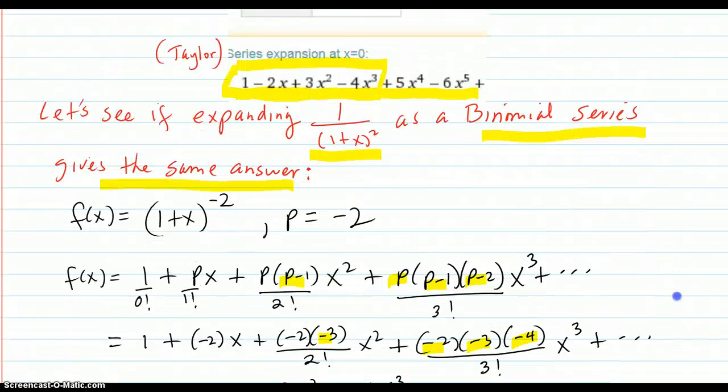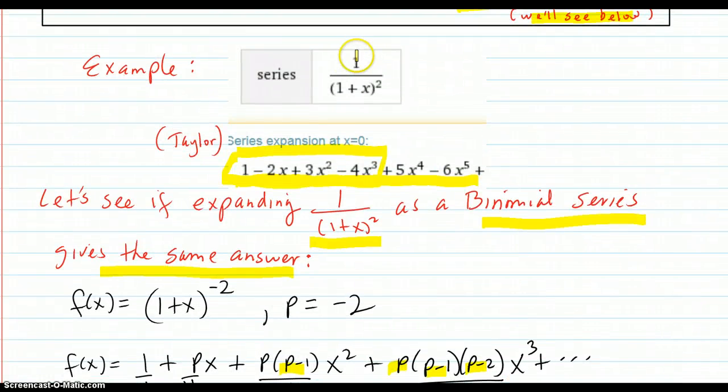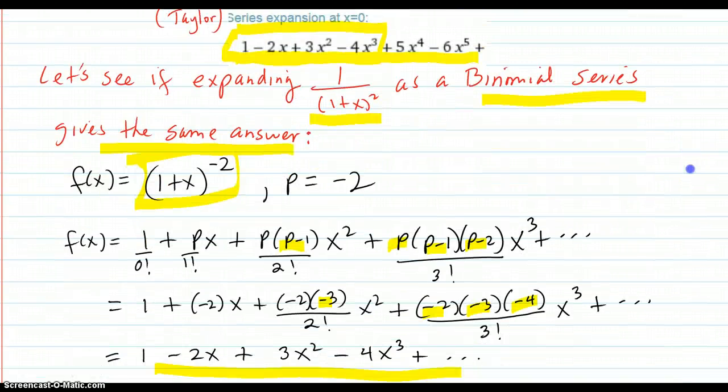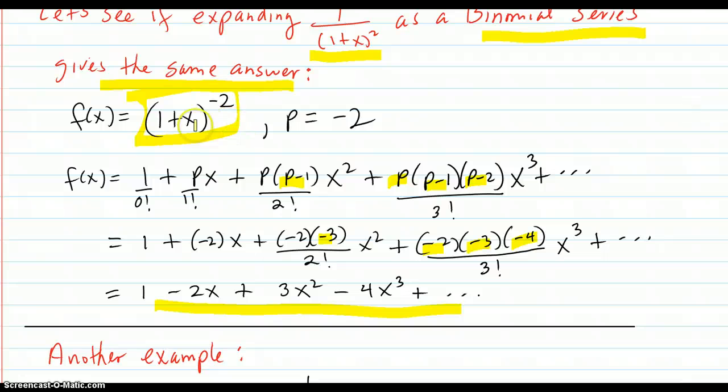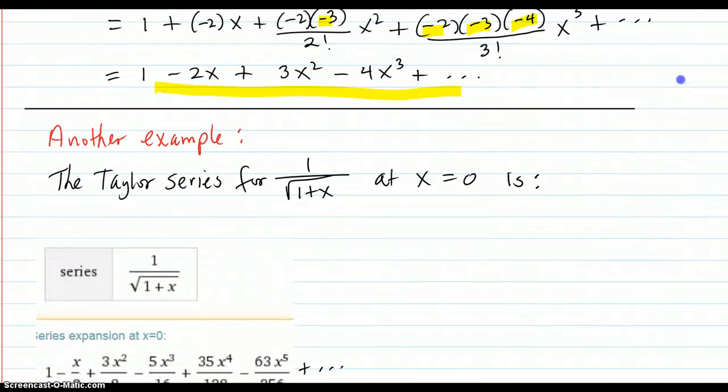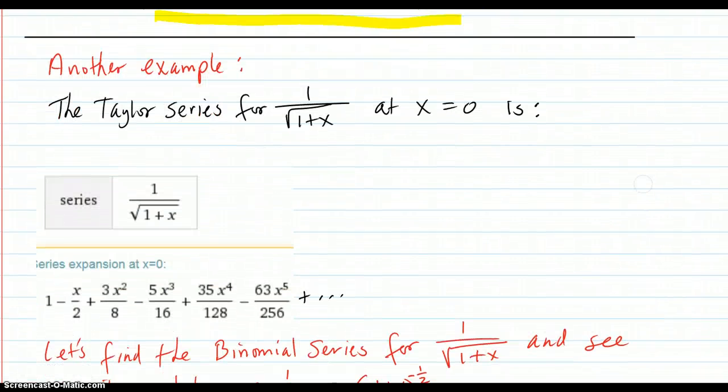So, the idea is, if you can spot these special ones that happen to be able to be expanded by rewriting this way in a binomial form, then you can use a binomial series because it's a lot faster. Notice we didn't have to go through any derivatives to do this example. We just wrote down with the formula.